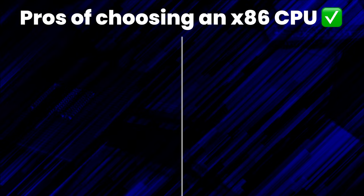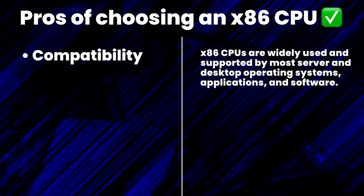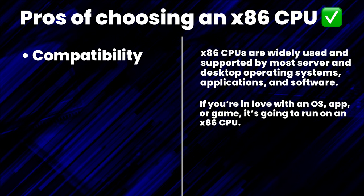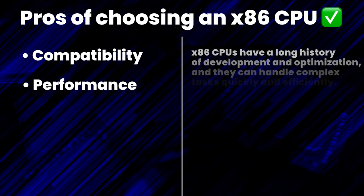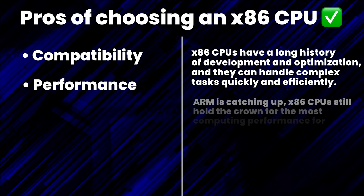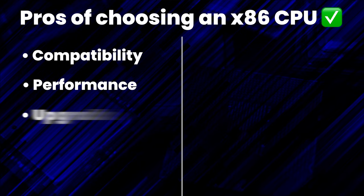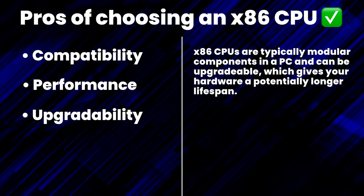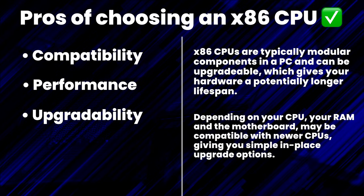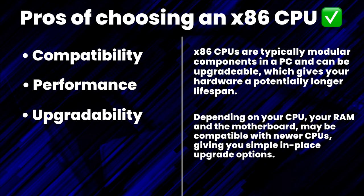These CPUs are used in everything from tiny single board PCs all the way up to incredibly powerful and power-hungry servers. The first pro is compatibility: x86 CPUs are widely used and supported by most server and desktop operating systems, applications, and software. If you're in love with an operating system, application, or game, it's going to run on an x86 CPU. Next pro is performance: x86 CPUs have a long history of development and optimization and can handle complex tasks quickly and efficiently. While ARM is catching up, x86 CPUs still hold the crown for general computing performance. Lastly, upgradability: x86 CPUs are typically modular and can be upgraded, giving your hardware a potentially longer lifespan. Depending on your CPU generation, your RAM and motherboard are typically compatible with newer CPUs, giving you simple in-place upgrade options.